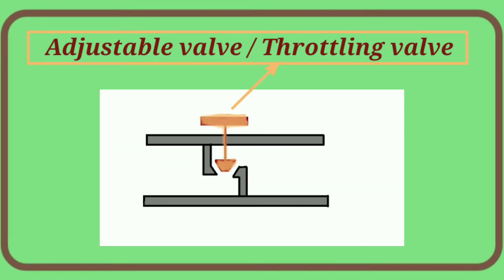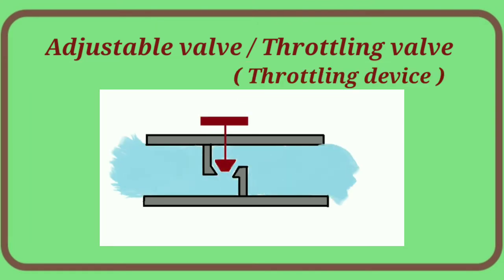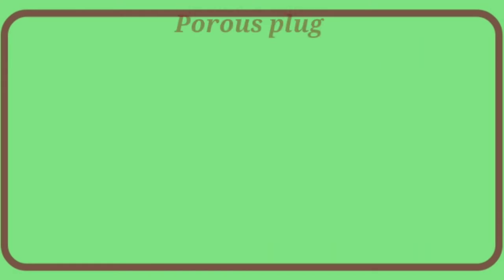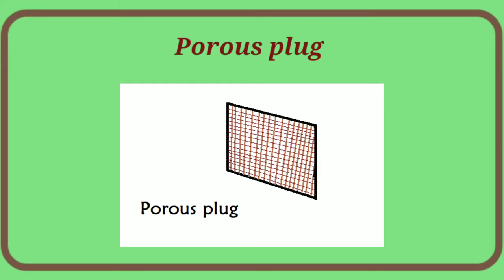Similarly, if we use another device for the throttling process — what do we call throttling devices? We use a porous plug for the throttling process. A porous plug is a structure like a net, and the fluid is partially restricted through it, causing a pressure drop.